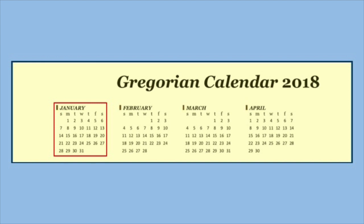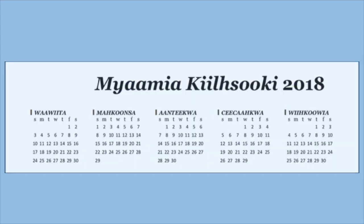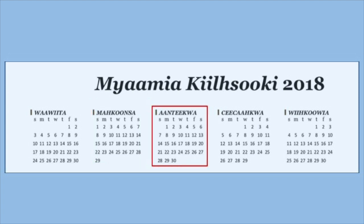For example, January is always 31 days long. Unlike the months on a Gregorian calendar, each month in Myaamia Kilsuke alternates between 29 and 30 days long. This is due to the lunar month being 29.5 days. For example, in 2018, Makunza Kilsua had 29 days and the following month, Andekwa Kilsua had 30 days.